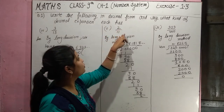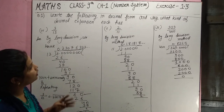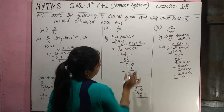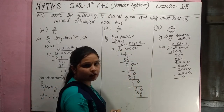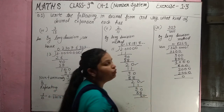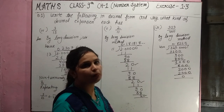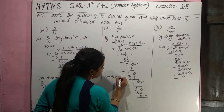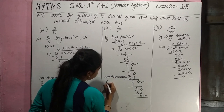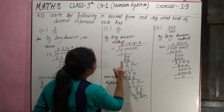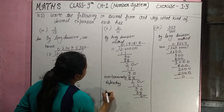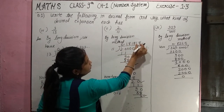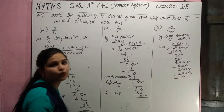Next question is 2 by 11. Again we use the long division method. We start with remainder 2, and remainder 2 keeps repeating. This means the decimal is non-terminating and repeating. So 2 by 11 equals 0.18 bar, because 181818... is repeated, and we write it as 0.18 bar.